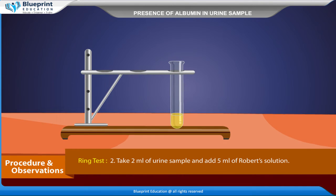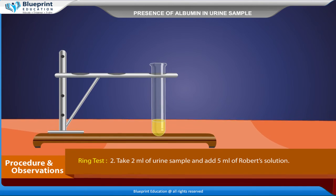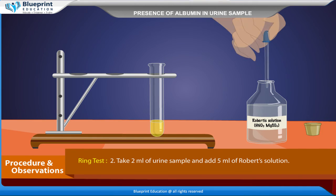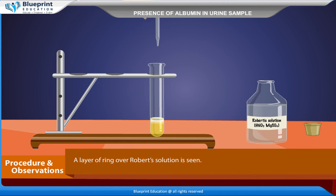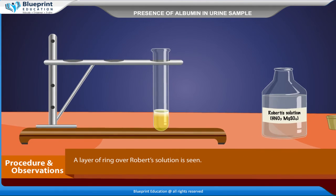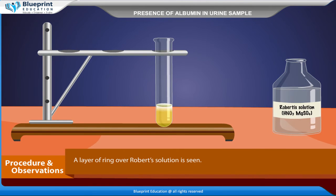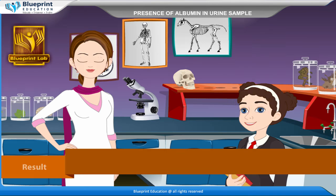Ring Test: Take 2 ml of urine sample and add 5 ml of Robert solution. A layer of ring over the Robert solution is seen. Inference: The given sample contains albumin.